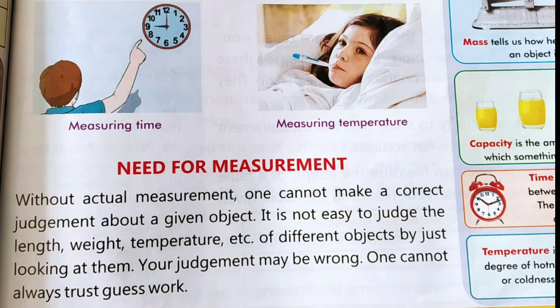Next is need for measurement, यानि हमें measure करने की जरुरत क्यों होती है. Without actual measurement, one cannot make a correct judgment about a given object. बिना सही माप के हम किसी object के बारे में correct judgment नहीं दे सकते हैं. It is not easy to judge the length, weight, temperature, etc. of different objects by just looking at them. हम केवल किसी चीज़ को देख कर उसका length, weight, और temperature नहीं जान सकते हैं. Your judgment may be wrong. हो सकता है आपका judgment यानि आपने जो परिणाम निकाला हो वो गलत हो. One cannot always trust guesswork. हम हमेशा guess किये हुए काम पर trust नहीं कर सकते हैं.